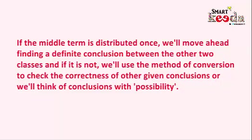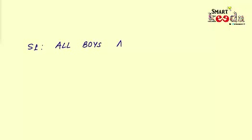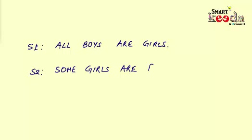Let's take an example to understand this. Statement 1 is 'All boys are girls' and Statement 2 is 'Some girls are pens.' We can clearly see that S1 is an A-type statement while S2 is an I-type statement, and the middle term is clearly 'girls.' To derive a definite conclusion between the class boys and the class pens, we need to check whether the middle term 'girls' is being distributed in either of the statements.